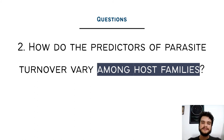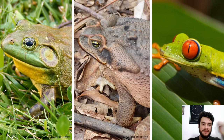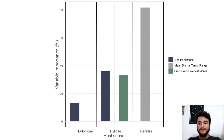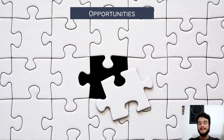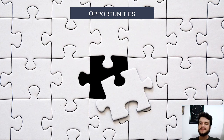Second, we wanted to understand how the predictors of parasite turnover vary among host families. We had three main families in our dataset: the Ranidae family, the Bufonidae family, and the Hylidae family. We found that the parasites of these families respond to different predictors. The Bufonidae parasites respond to spatial distance, while the Hylidae parasites respond to spatial distance and precipitation of the wettest month, and the Ranidae parasites responded to mean diurnal temperature range.